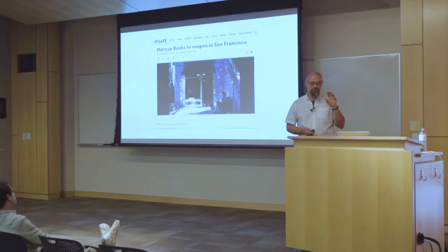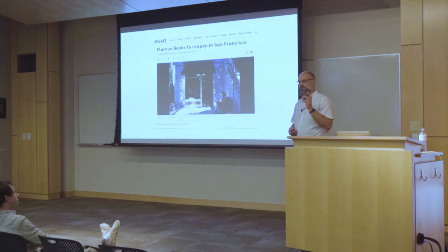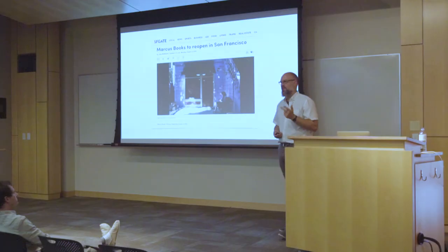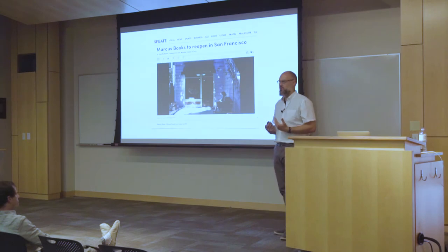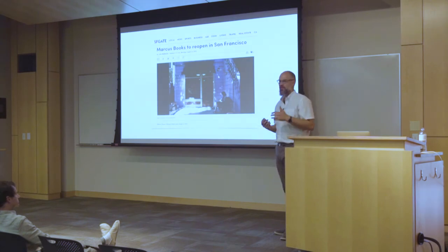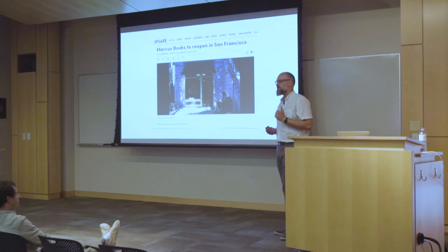The project I wanted to highlight here was Marcus Bookstore — an African-American bookstore in San Francisco. In the 60s, Martin Luther King and Malcolm X spoke there. In the 80s, Miles Davis played there. It's not a bookstore; it's a cultural institution, much like City Lights. And then it got evicted in 2012. It left San Francisco along with a lot of the black population — we've gone from 15% in 1990 to about 3.5% today in San Francisco.